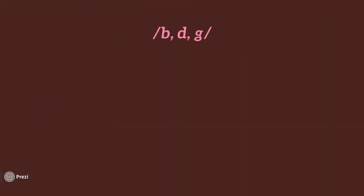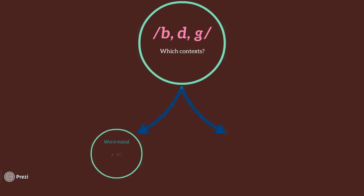As we already know, voiced plosives, that is /b, d, g/, are only fully voiced between vowels. But what happens in word initial and word final positions? Let's see what I've done.